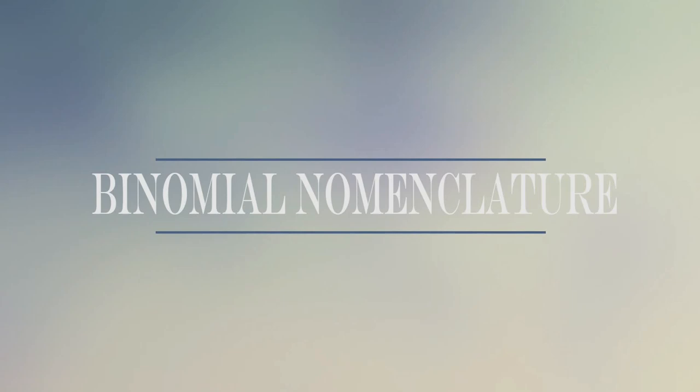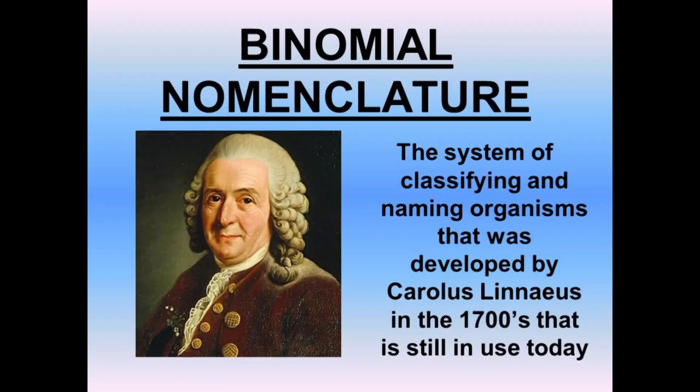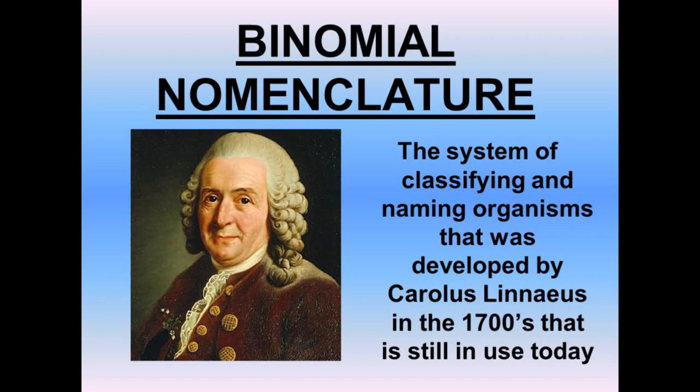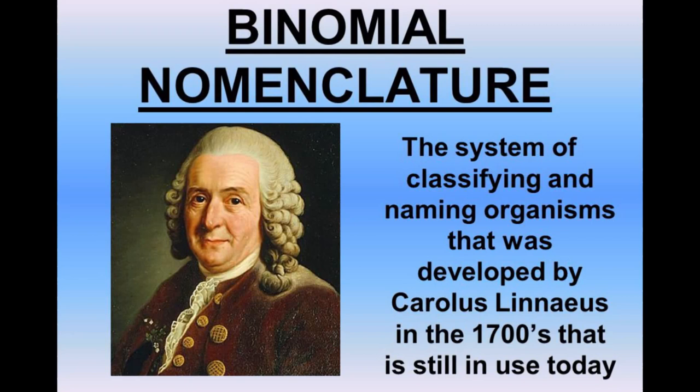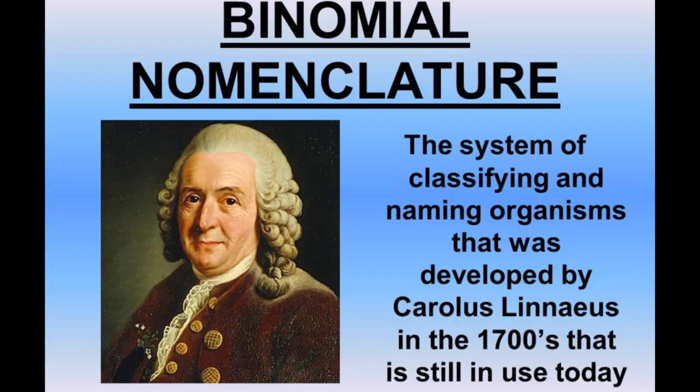Binomial nomenclature is a systematic naming convention used in biology to give each species of organism a unique two-part scientific name. This naming system was developed by the Swedish botanist and biologist Carl Linnaeus in the 18th century and is sometimes referred to as Linnaean taxonomy in his honor.